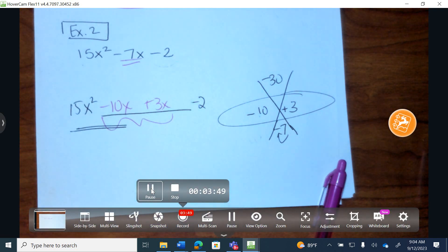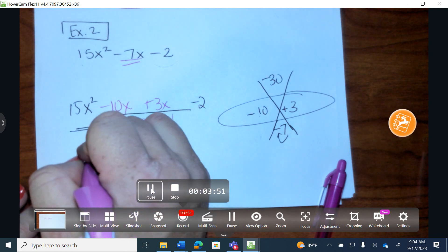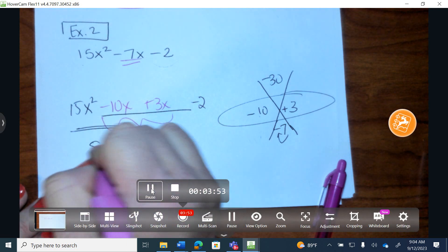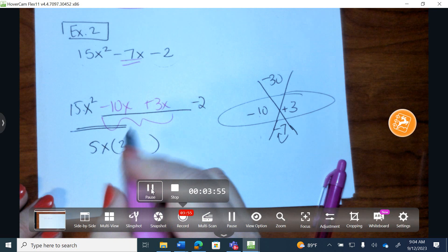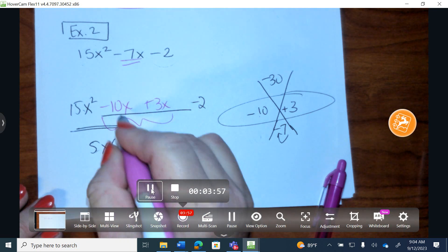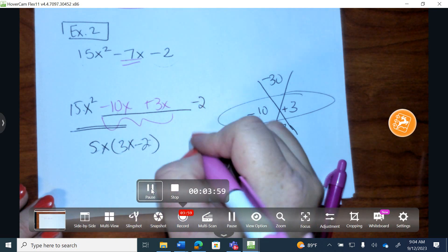What's the most I can factor out of 15x squared and a 10x would be 5x. 5 times 3 is 15, attaching one more x. 5 times negative 2 is negative 10, attaching an x.